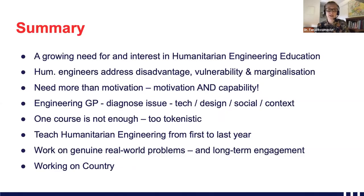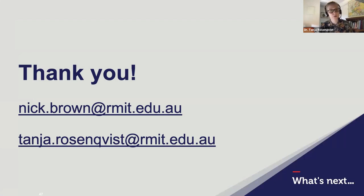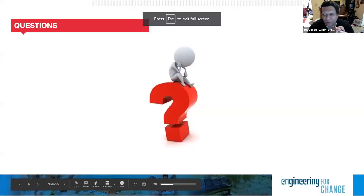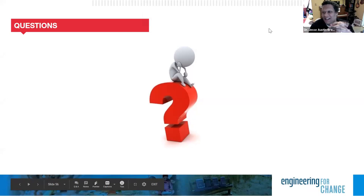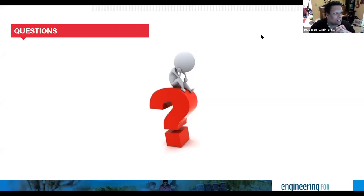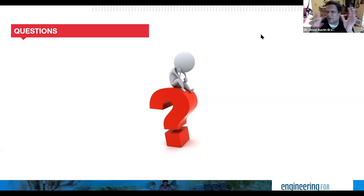Thank you, Tanya and Nick, for sharing all of these exciting program developments and your conceptualization of humanitarian engineering. It's really inspiring for those of us in the US hoping to build similar programs. We have some questions in the Q&A. Could you talk a little bit more about the difference between humanitarian engineering content and traditional engineering content? You want to shift what engineering means — you have a social component, different courses. Could you elaborate specifically on the type of projects and whether the content differs for emergency disaster situations versus longer-term sustainable development?